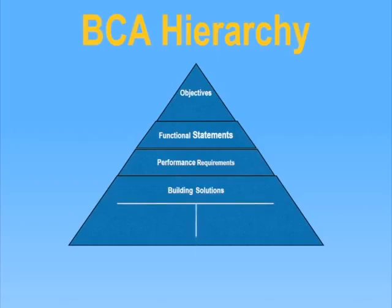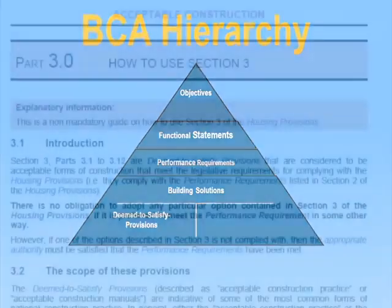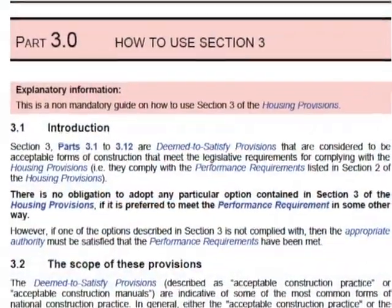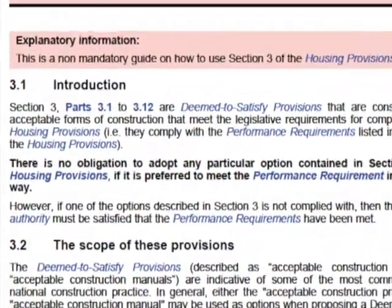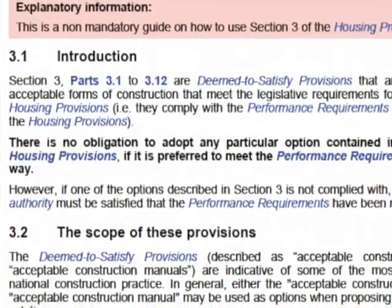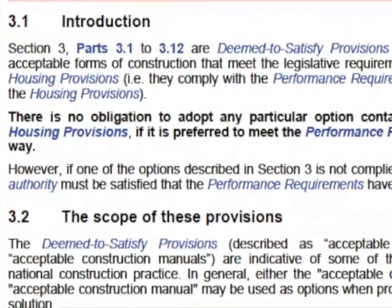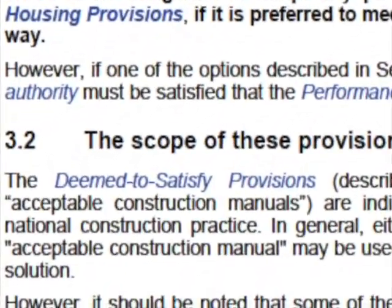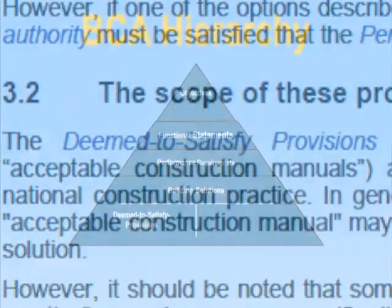The Building Codes of Australia provides two methods that can be followed to develop a building solution. The first is the deemed to satisfy method. This provides examples of materials, components, design factors, and construction methods which, if used, will result in compliance with the performance requirements.